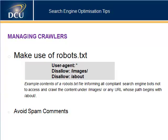The next SEO tip is how to manage crawlers or web spiders. Robots.txt is a file you can create that sits on the root directory of your site. Its contents tell search engine spiders which parts of the site should not be crawled and how to interact with indexing your content. For example, a robots.txt file can inform all compliant search engine bots not to access the content under /images or any URL whose path begins with /about, using the disallow directive with a wildcard user agent.